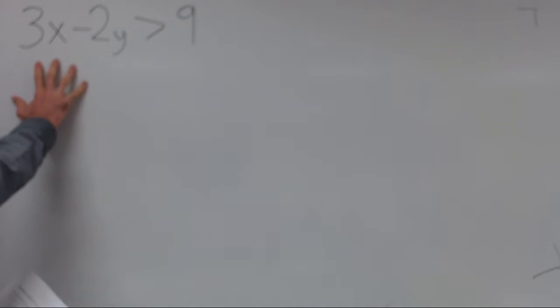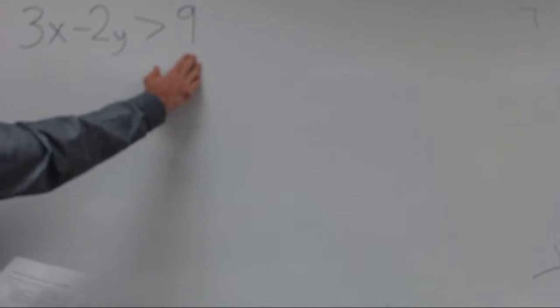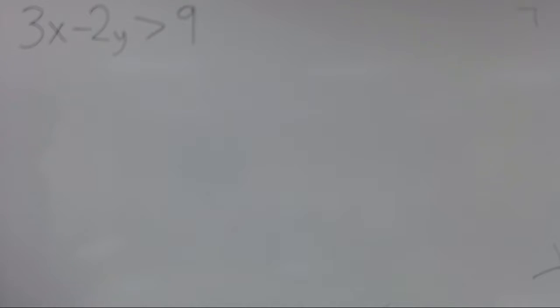In the first example we have the inequality 3x minus 2y greater than 9. The first step is to find the corresponding equation, which is the same as the inequality, but you just replace the inequality symbol with an equal symbol.